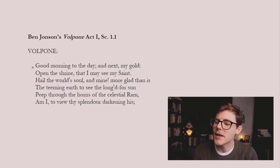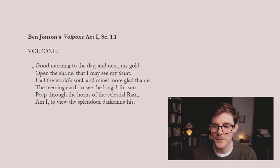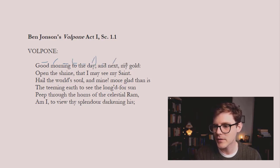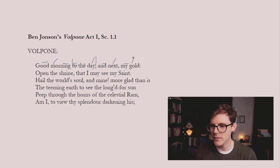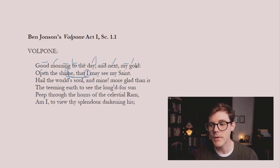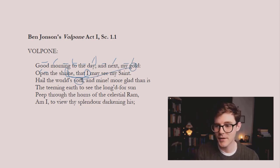'Good morning to the day, and next, my gold. Open the shrine that I may see my saint. Hail the world's soul and mine.' The rhythm here is as we'd expect — 'Good morning to the day, and next, my gold' — it's got a nice rhythm to it. We have a trochee here, but it settles again. We've got a beautiful linking of the long I sound — this is called assonance, the repetition of a vowel sound. We have the O in 'gold' linking to the O in 'soul.' And of course the world's soul is the sun, but the gold is his soul.